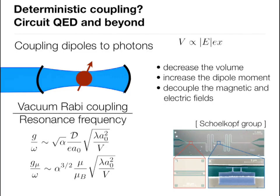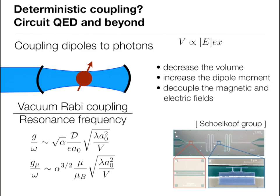Another trick: in the optical domain, electric and magnetic field energies are inseparable, but in the microwave domain you can go into the lumped element limit because metal pieces are much smaller than the wavelength. An example from Ben Palmer's group at LPS shows a meandering inductor and capacitor system where electric and magnetic field energy are spatially separated. This allows concentration or expansion of the relevant volume — another axis of control.